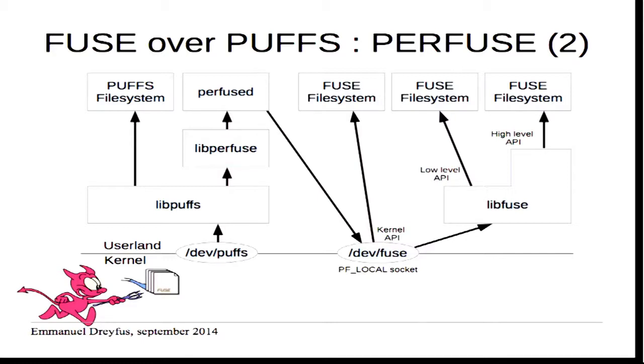A new project is called PerFUSE. The idea is to implement the FUSE kernel API so that we can use the stock libfuse on top of it and support everything. The request goes from the kernel to userland through /dev/puffs and through libpuffs, then through libperfuse. A daemon called PerFUSEd translates the PUFFS request into a FUSE request and sends it to a /dev/fuse socket so the FUSE file system can use it directly through the kernel API or through libfuse using either the high-level or low-level API.